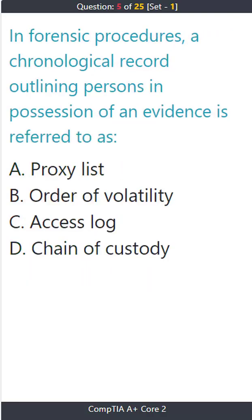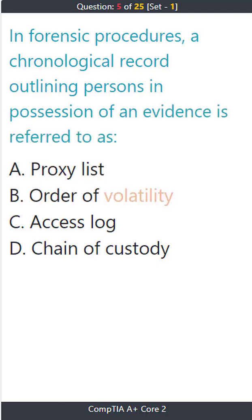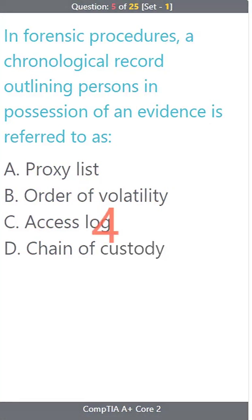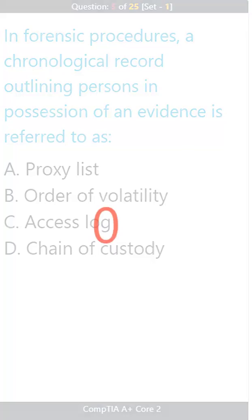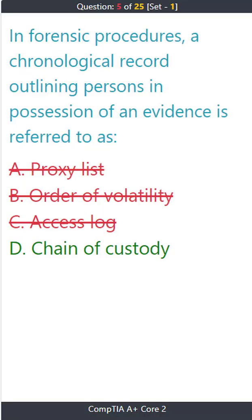Question 5: In forensic procedures, a chronological record outlining persons in possession of evidence is referred to as: A) proxy list. B) order of volatility. C) access log. D) chain of custody. The correct answer is D: chain of custody.